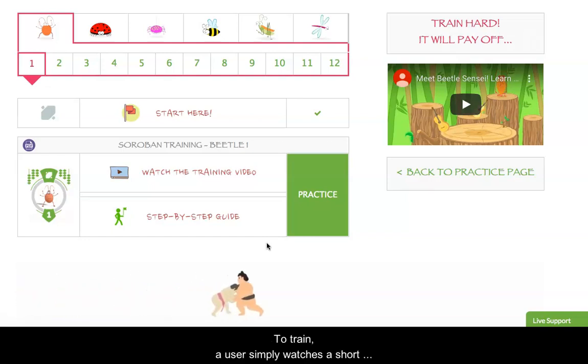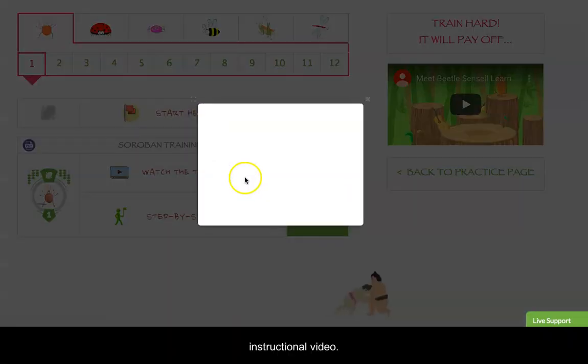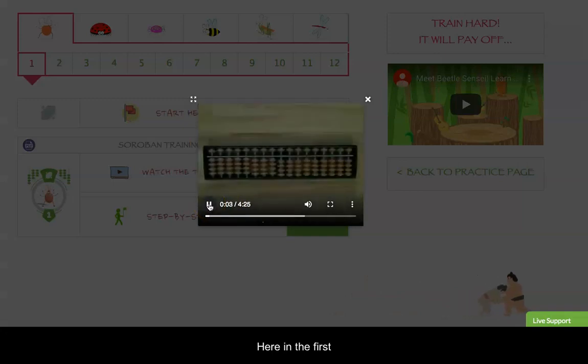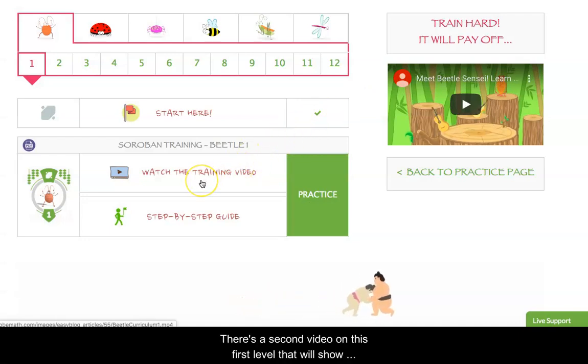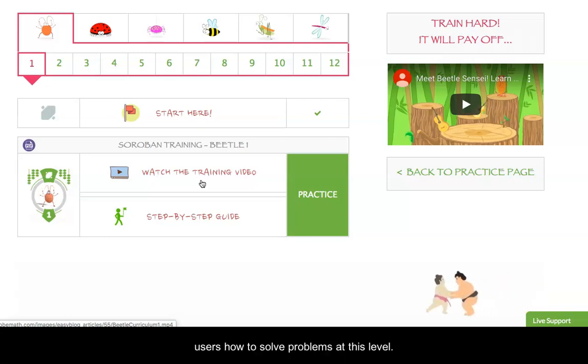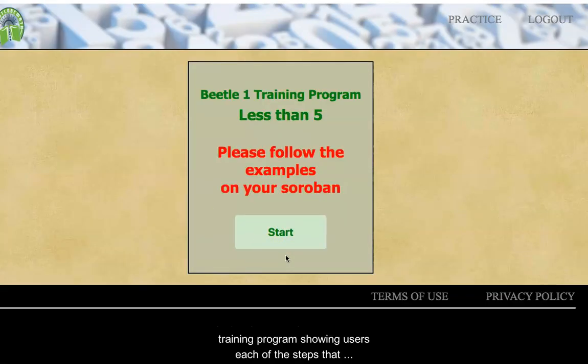So to train, a user just simply watches a short instructional video. Here in the first Beetle level, a user is shown a video that teaches them how to operate an abacus, how to do simple number counting, and the basic bead movements. There's a second video on this first level that will show users how to solve problems at this level, and finally there is a step-by-step guide that this training program will show users each of the steps that they need to take to solve a problem efficiently. So let's just take a quick look at this.